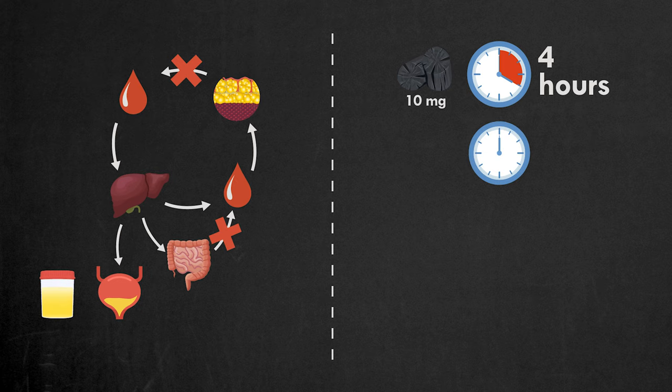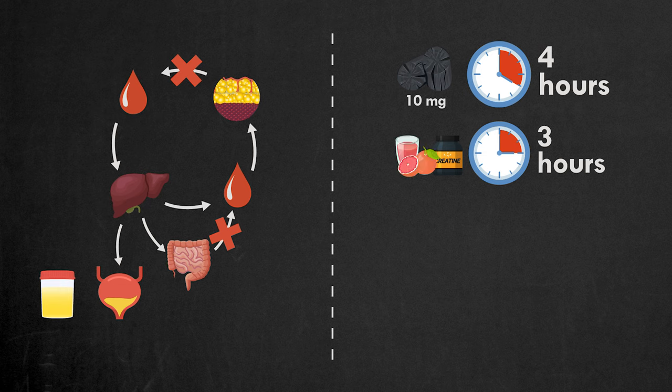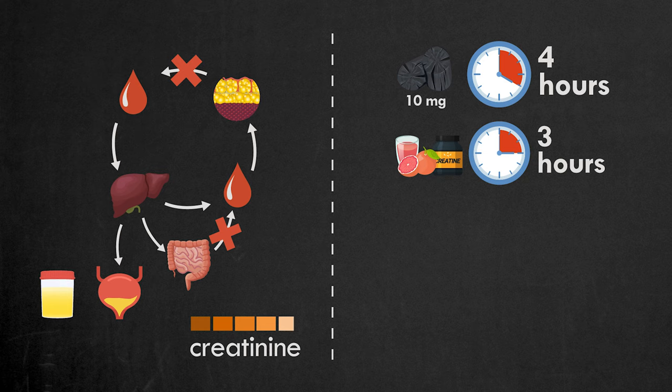Three hours before the test, mix creatine with grapefruit juice in a cup and drink it. This mixture will raise the creatinine levels in your urine back to their normal level. The grapefruit juice speeds the absorption of creatine and slows down the metabolism of THC in the liver.